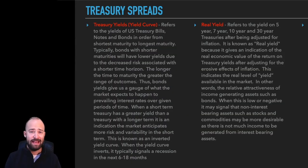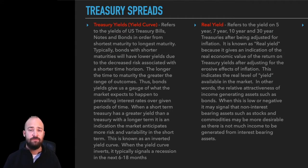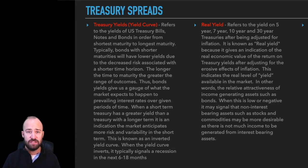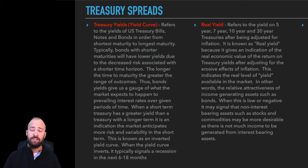In theory, treasuries with longer maturities should always have higher yields than shorter maturities, but in practice time is not the only risk factor. Yields are ultimately driven by supply and demand. The U.S. government is on the supply side, while investors are on the demand side. If investors collectively perceive more risk associated with U.S. treasuries, demand goes down, pushing prices down until they're attractive enough to boost demand again. Bond prices and bond yields have an inverse correlation — as bond prices go down, yields go up.